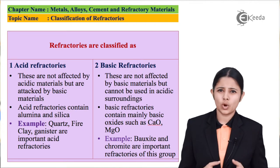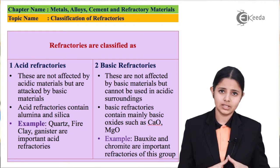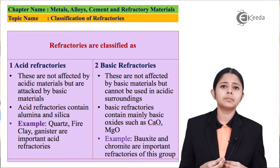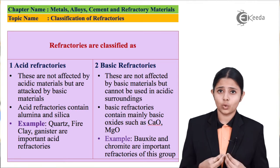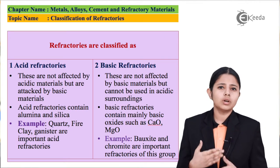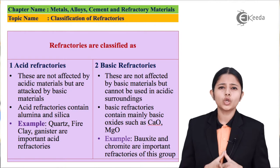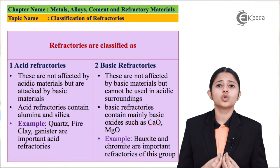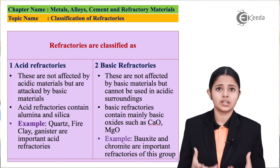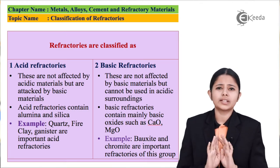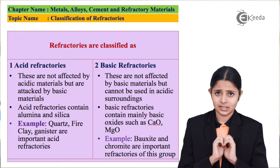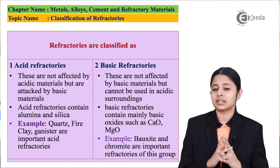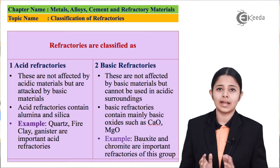Acidic refractories may also be called acid-friendly refractories, and basic refractories may also be called base-friendly refractories. If I know that I have to do metallurgy on iron wherein a lot of acid will be formed and a lot of acidic gases will be produced, then I have to use acidic refractories — because acidic refractories are unaffected by acids. They will not react with acids at all and are stable inside the blast furnace at extremely high temperatures.